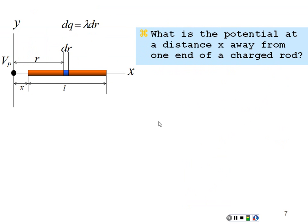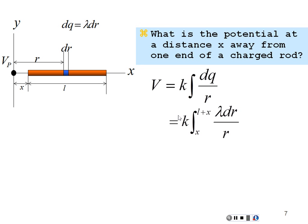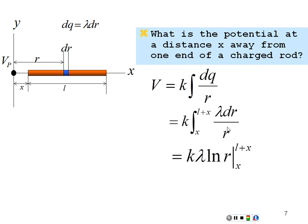Let's try another example: the potential at distance x away from the end of a charged rod. That would be k times the integration of dq over r. Here dq equals charge per length lambda times dr, so it's dependent on r. Lambda is constant so we can take it out, and we integrate dr over r from one end of the rod to the other, from x to l plus x. The integration gives k lambda natural log evaluated from x to l plus x, which gives us k lambda times the natural log of (l plus x) divided by x. That's our potential a distance x from one end of the rod.